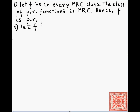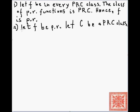Conversely, assume f is primitive recursive. Let C be an arbitrary primitive recursively closed class. Since f is primitive recursive, there is a finite sequence of functions f₁ through fₙ, with fₙ being f — a derivation of f from the initial functions.